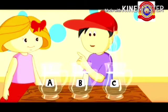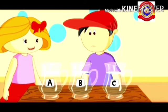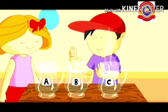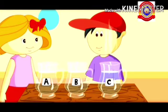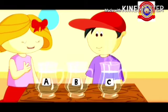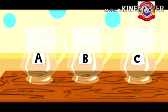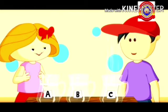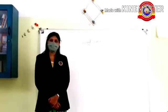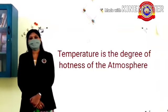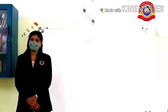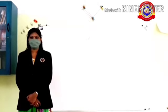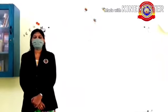It is too cold! But can we touch everything by our hand to check the heat? No, it is dangerous — we may hurt our hand. Do you know why things are hot or cold? It depends upon the amount of heat in a thing. That is called temperature. Temperature is the degree of hotness of the atmosphere.